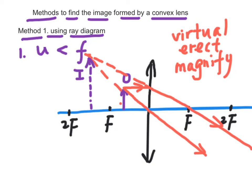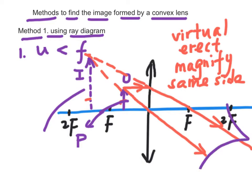Also, the image and the object are on the same side of the lens. If the object is the letter P, then the image, when looking through the lens, will be magnified and erect. The lens used in this case acts as a magnifying glass.